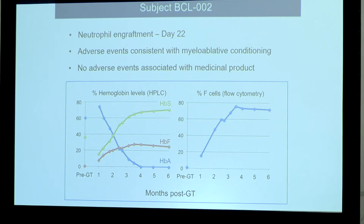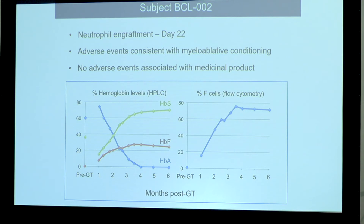But just as important as the total amount of fetal hemoglobin is how that fetal hemoglobin is distributed. We can assess this by looking at something called F cells. F cells are cells that produce fetal hemoglobin at a measurable level. On the right graph, you can see that our patient is producing and maintaining a very high level of F cells, suggesting that his fetal hemoglobin is distributed broadly, protecting a large proportion of cells against sickling.